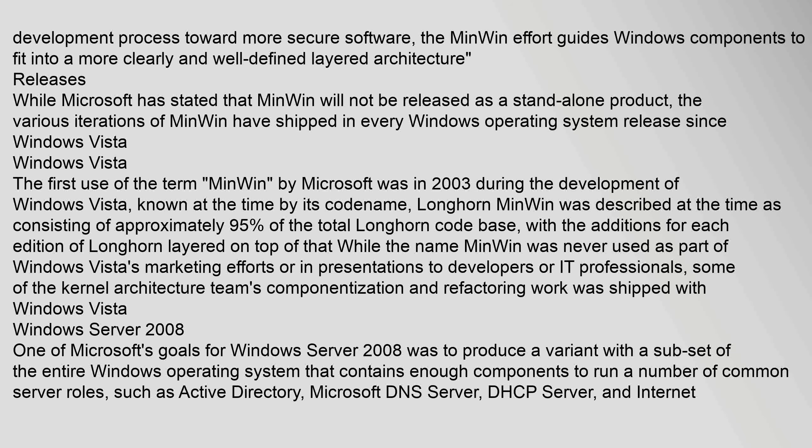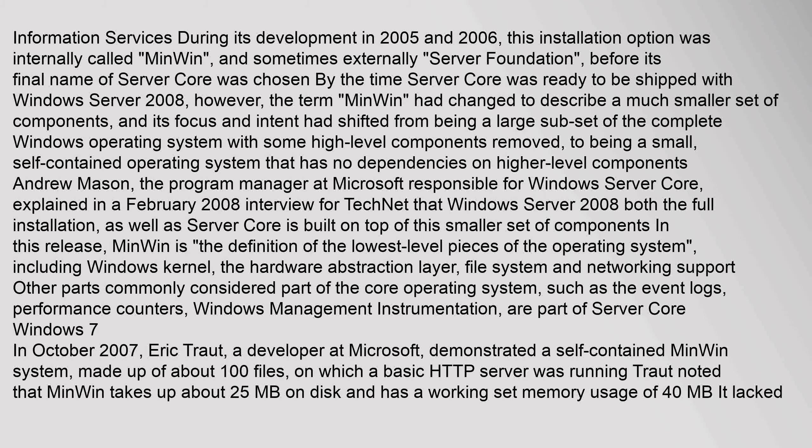One of Microsoft's goals for Windows Server 2008 was to produce a variant with a subset of the entire Windows operating system that contains enough components to run a number of common server roles, such as Active Directory, Microsoft DNS Server, DHCP Server, and Internet Information Services. During its development in 2005 and 2006, this installation option was internally called Minwin, and sometimes externally Server Foundation, before its final name of Server Core was chosen. By the time Server Core was ready to ship with Windows Server 2008, however, the term Minwin had changed to describe a much smaller set of components.